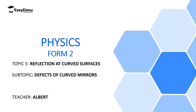Welcome to Easy Elimu Learning Simplified. Welcome to this last part of this topic: deflection at curved surfaces. Today we are going to discuss the defects of curved mirrors. From the beginning of this chapter, we have been discussing narrow parallel beams of light, close and parallel to the principal axis, in studying reflection of light by curved mirrors. For a concave mirror, we said all these rays, which we call the paraxial rays, will converge at one particular point, which we call the principal focus.